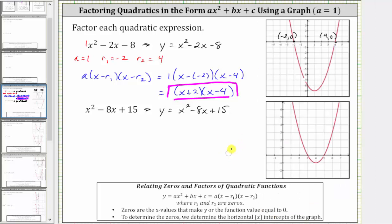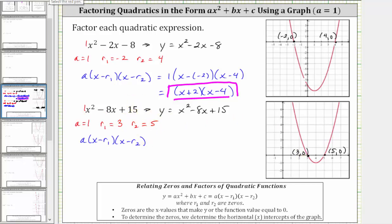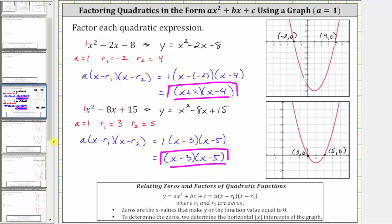Let's record this information on our graph. We have one horizontal intercept at the ordered pair three, comma zero, and the other at five, comma zero. To write the expression in factored form, a, the leading coefficient, is one. Let r₁ equal three and r₂ equal five. We write one times the quantity x minus three, times the quantity x minus five. Leaving off the one, the factored form of x squared minus eight x plus 15 is the quantity x minus three, times the quantity x minus five. The nice thing about factoring is we can always multiply the factors to verify we get the original expression. I hope you found this helpful.